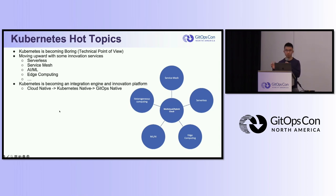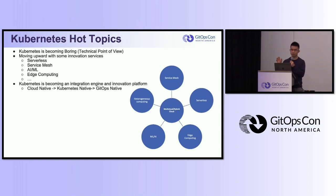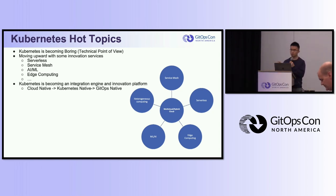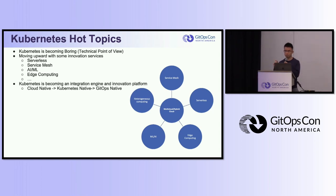Previously, when we talked about Cloud Native, we meant using containers to manage apps — with Docker, Kubernetes, or Swarm. But after Kubernetes, Cloud Native is becoming Kubernetes native, meaning if you talk about containers, you always mean using Kubernetes to manage your apps. But what will be the future? As many people build applications on top of Kubernetes, maybe GitOps native will be the future.